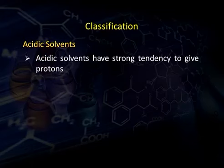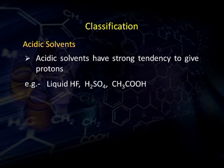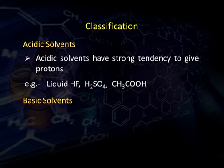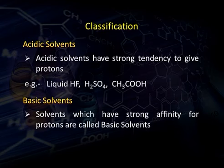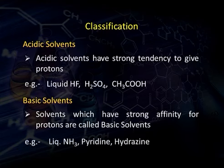The third classification includes acidic solvents, basic solvents, and amphiprotic solvents. Acidic solvents have a strong tendency to give protons — examples are liquid hydrogen fluoride, sulfuric acid, and acetic acid. Basic solvents have a strong affinity for protons and accept protons — examples are liquid ammonia, pyridine, and hydrazine.